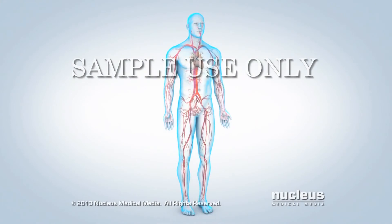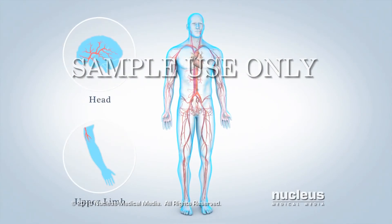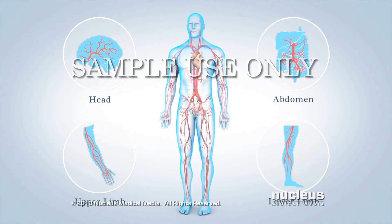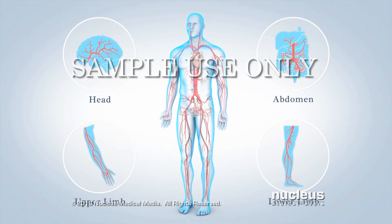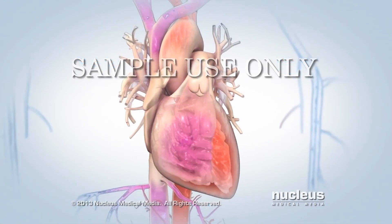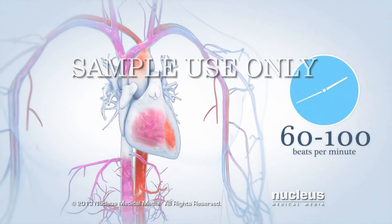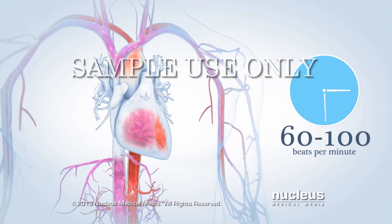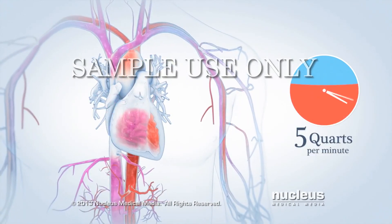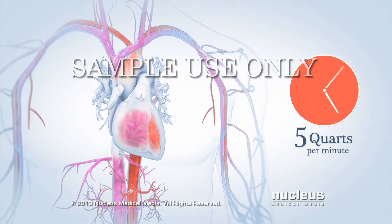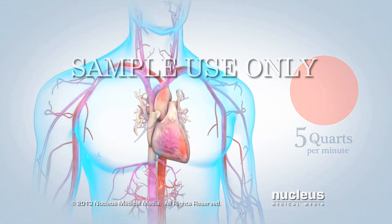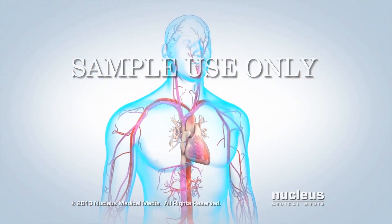At the top of your aorta, arteries branch off to carry blood to your head and arms. Arteries branching from the middle and lower parts of your aorta supply blood to the rest of your body. Your heart beats an average of 60 to 100 beats per minute. In that one minute, your heart pumps about 5 quarts of blood through your arteries, delivering a steady stream of oxygen and nutrients all over your body.